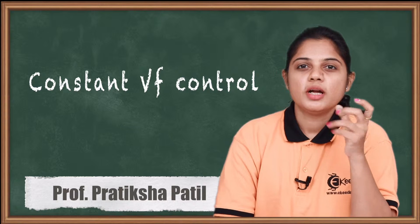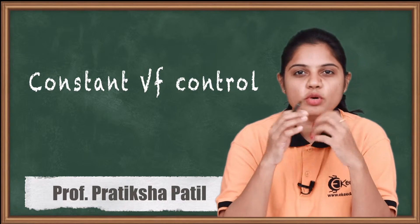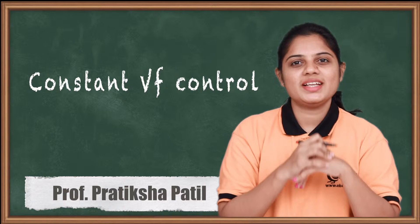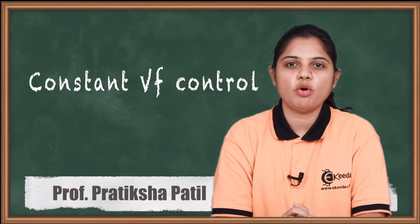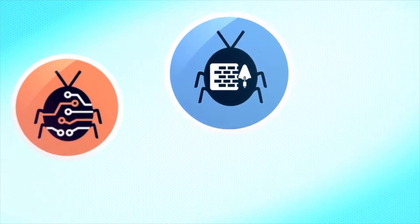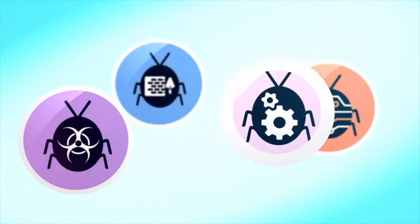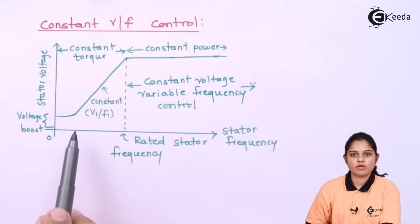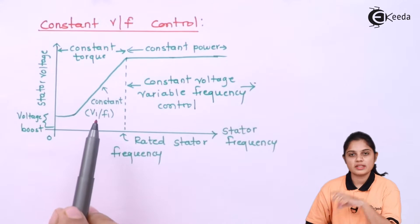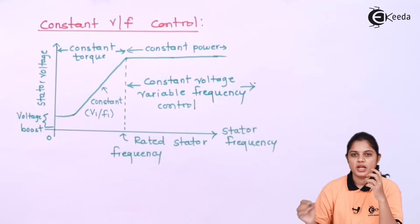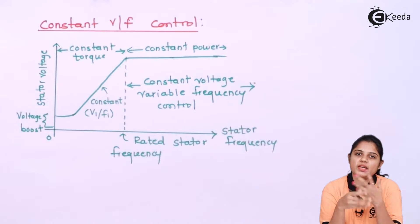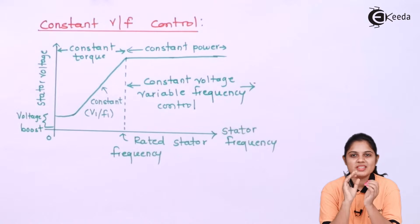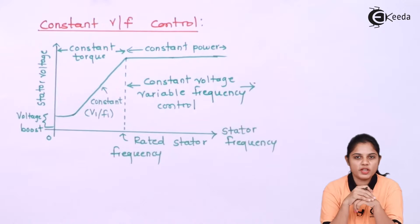This is one of the basic types which is mostly used to control the speed of the motor. Let's see what is V by F control of the three-phase induction motor. The topic name itself is explanatory — V by F means the ratio of voltage and frequency.